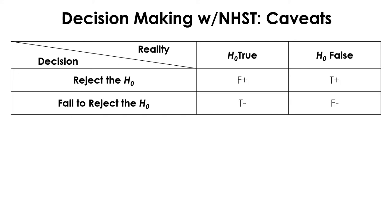Now let's just hold on to that for a moment — accepting that that is just the rule of the game — but because of that very rule, NHST bears some interesting implications after each decision we make. Let's turn to the table here. The status of the true reality about the null, unknown to us, is listed column-wise: null true or null false.